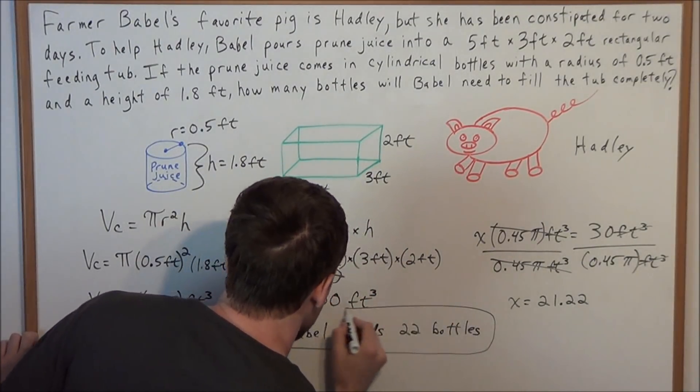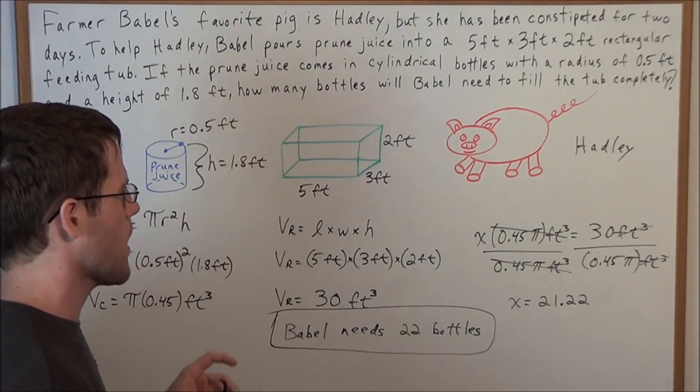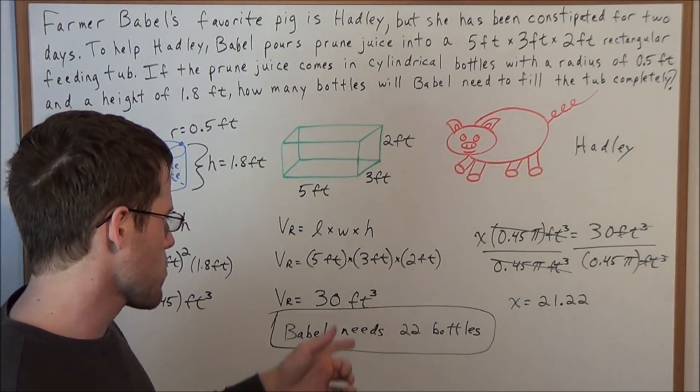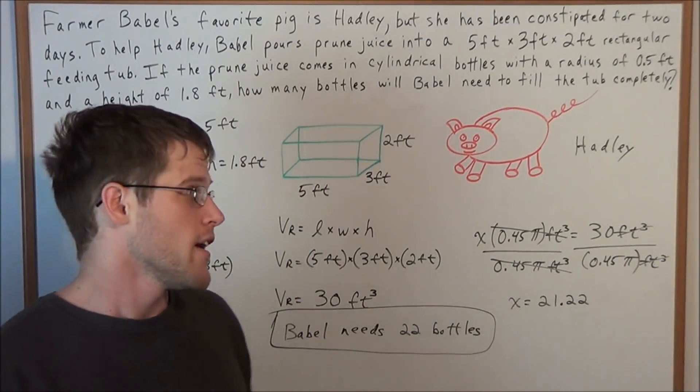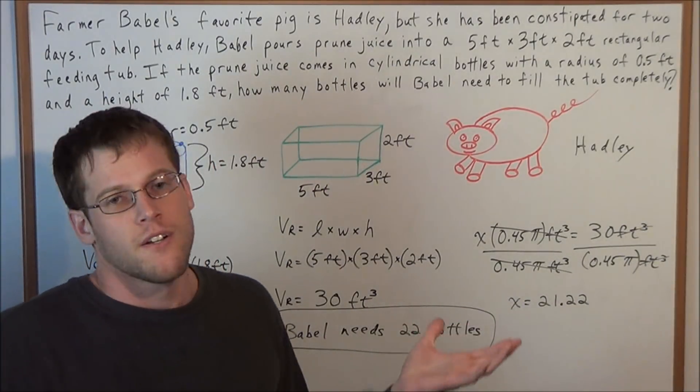So he's going to go to the cellar, and he's going to grab 22 bottles for this poor pig Hadley. And I'm sure these 22 bottles of prune juice will do the trick and restore Hadley back to her happy state.